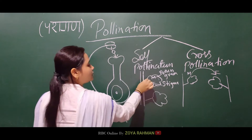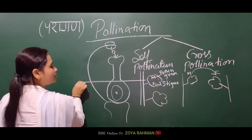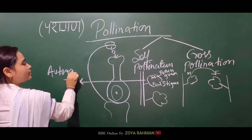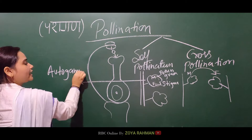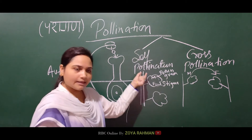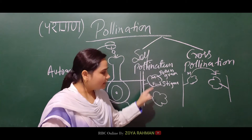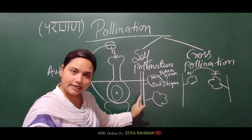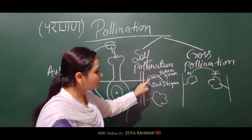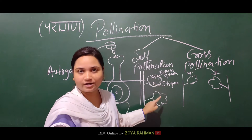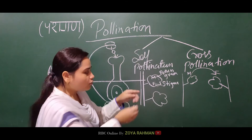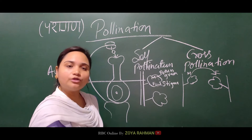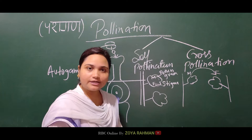If pollination occurs within the same flower — between the pollen grain from the same flower's male part and its stigma — this type of self-pollination is known as autogamy. But if there is one plant with two different flowers on it, pollination between those two flowers is a different case.